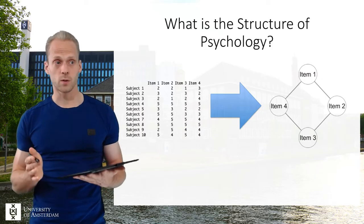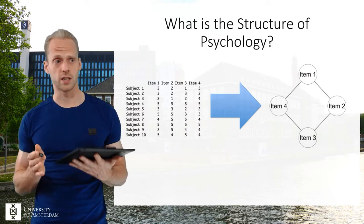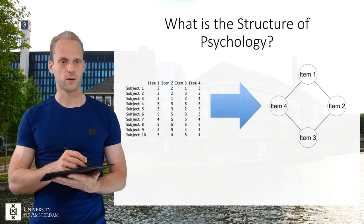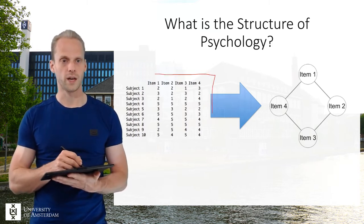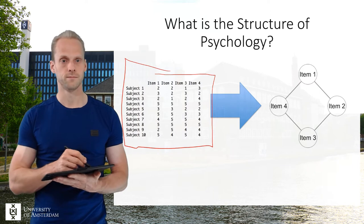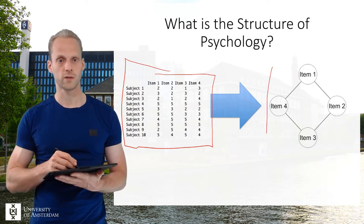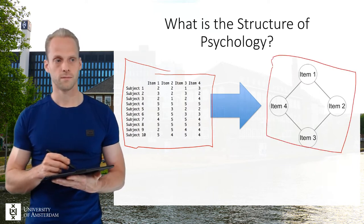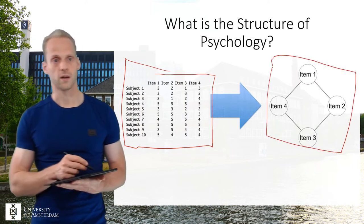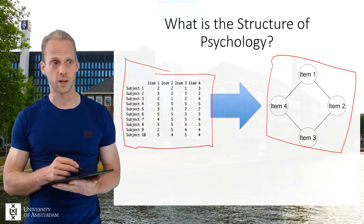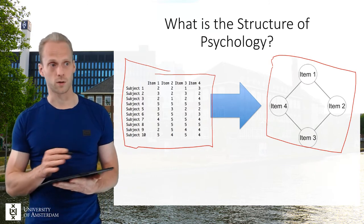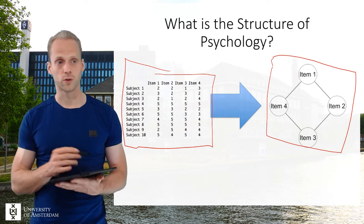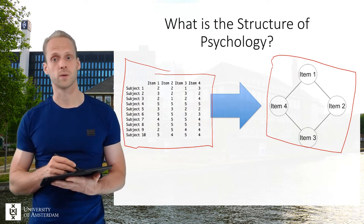So the main question of this series of lectures is: what is the structure of psychology? So how do we go from data to a network structure? Usually we have observed data, like cross-sectional data. This could also be time series data, but we'll talk more about that in a later lecture as well.